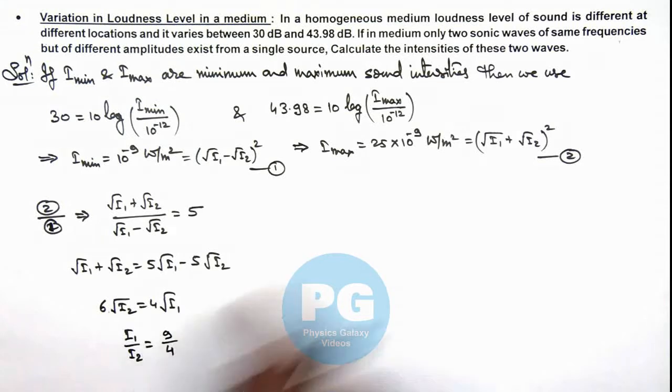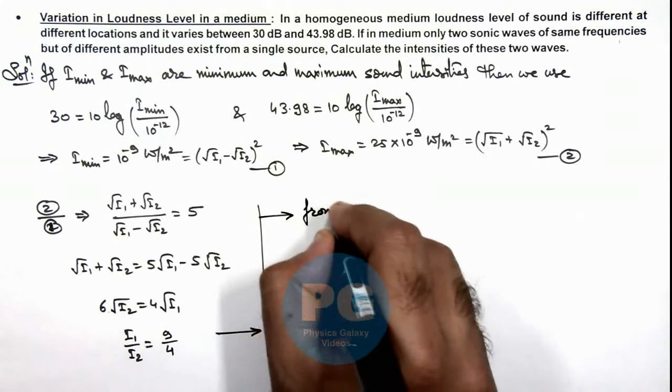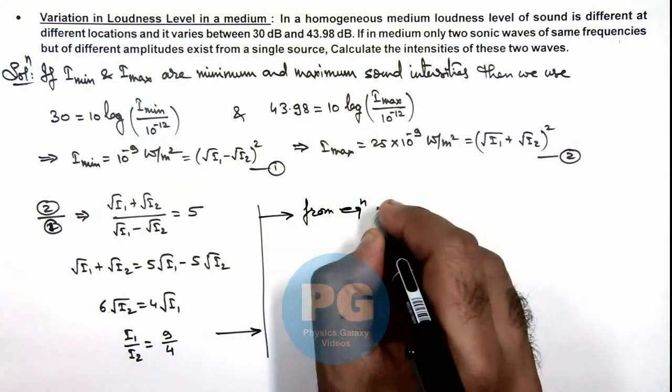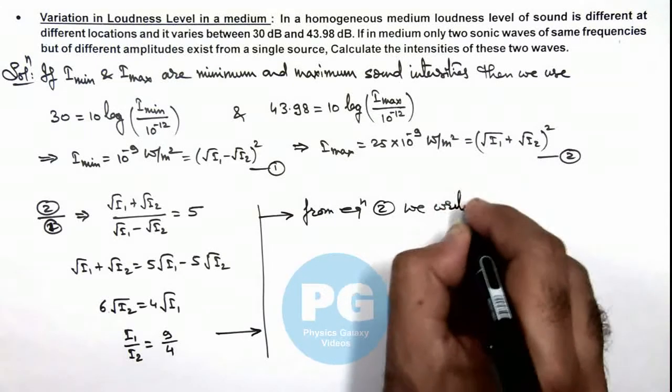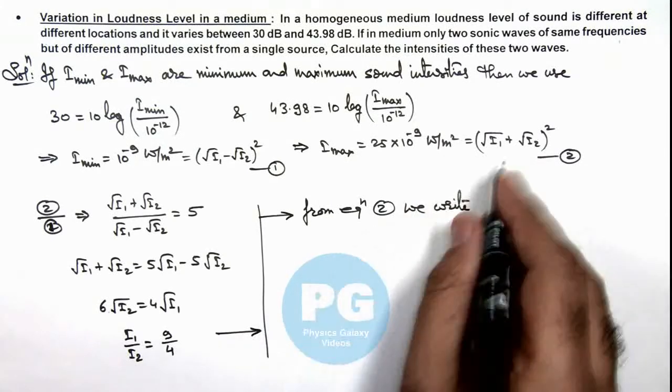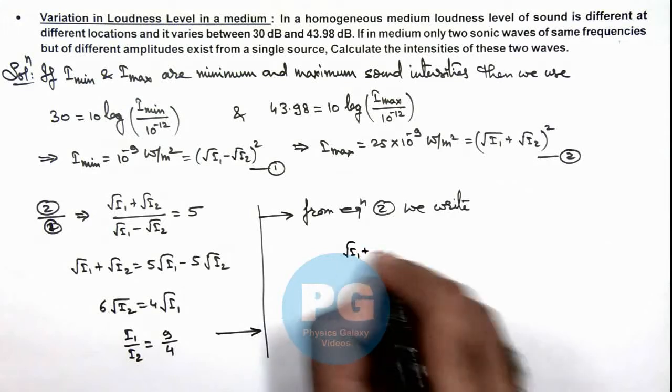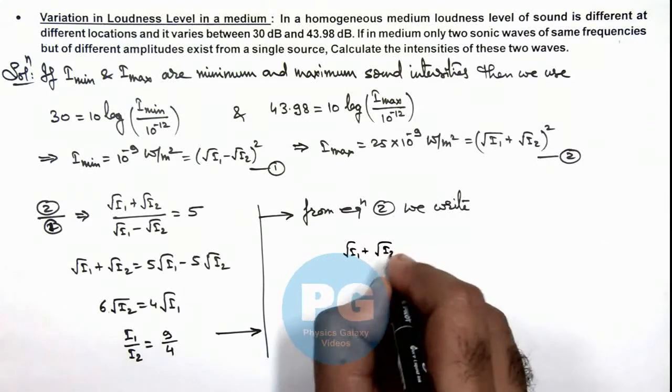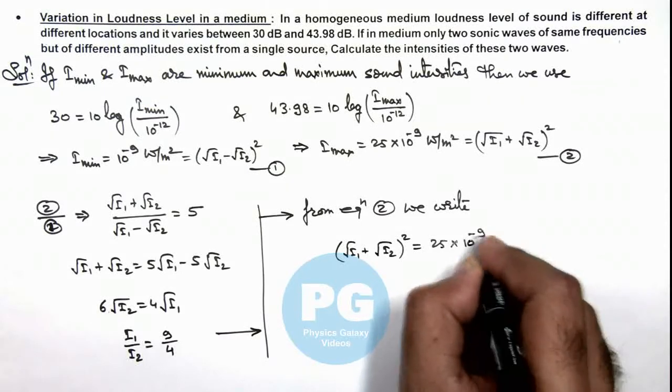Then directly using from any of these equations we can see from equation 2, we write this equation gives root I_1 plus root I_2 whole square is equal to 25 into 10 to power minus 9.